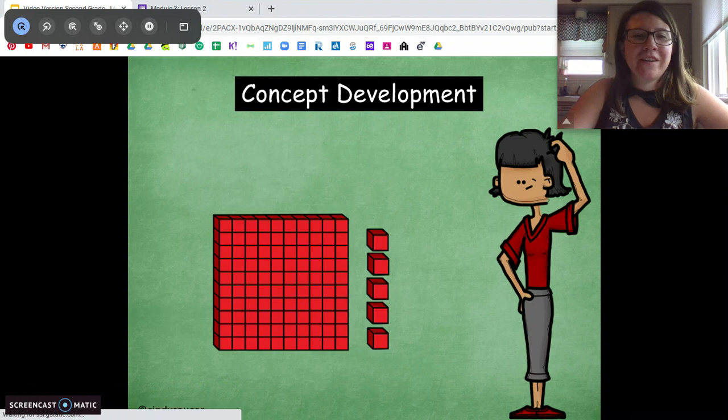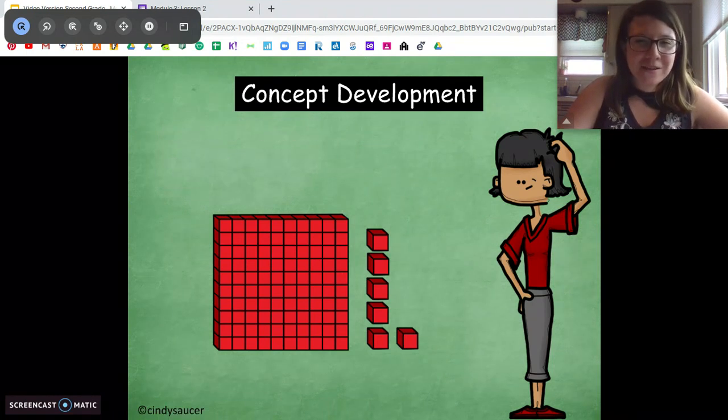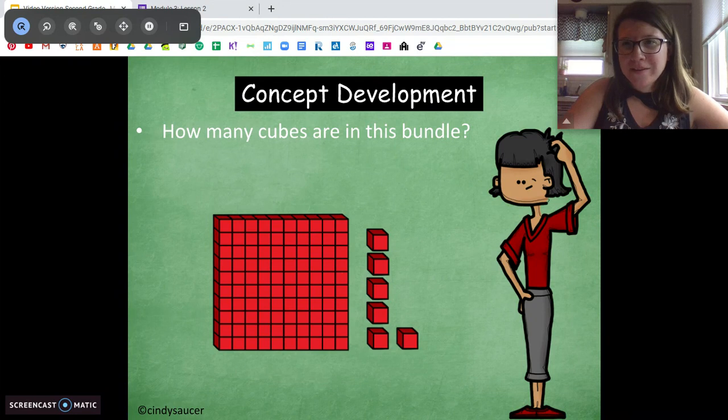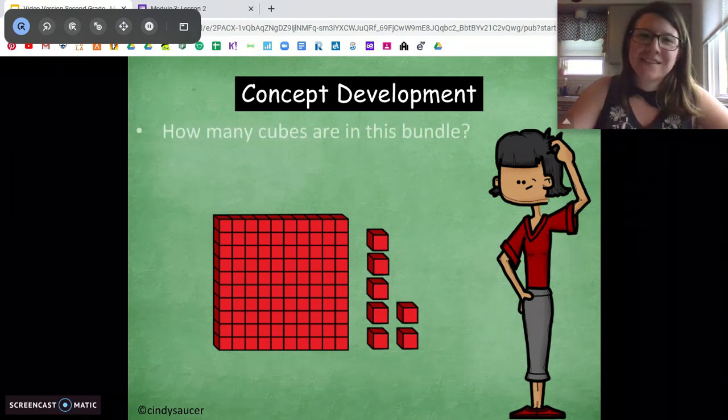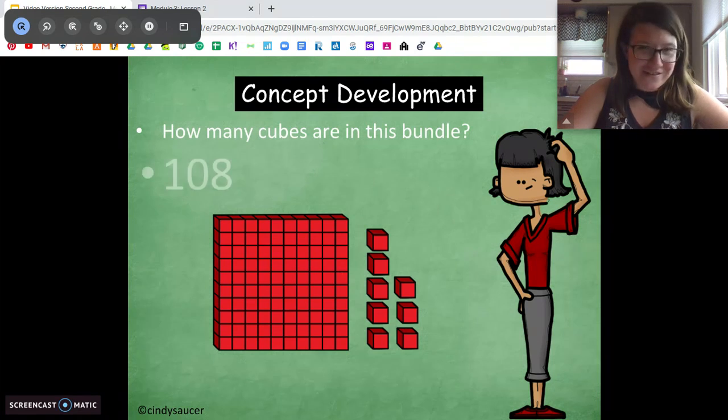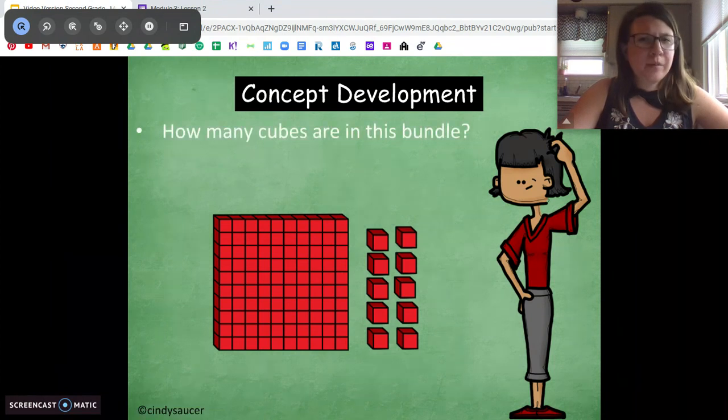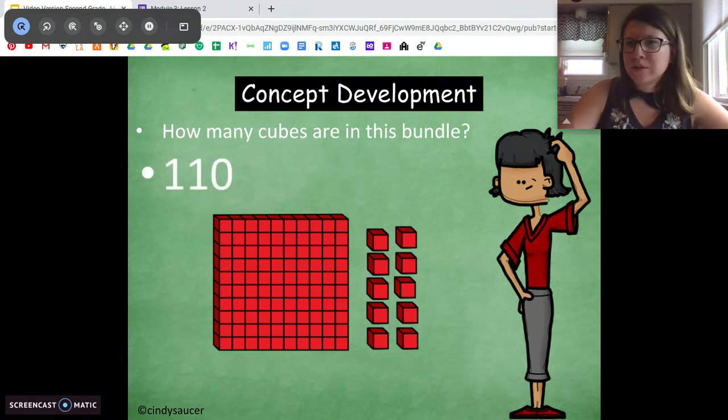104. Very good. 105. Awesome. You got it. How many now? 106. 107. 108. 109. Good. How many is this? We have 100, and then how many ones? 10 ones, right? So it's 110.